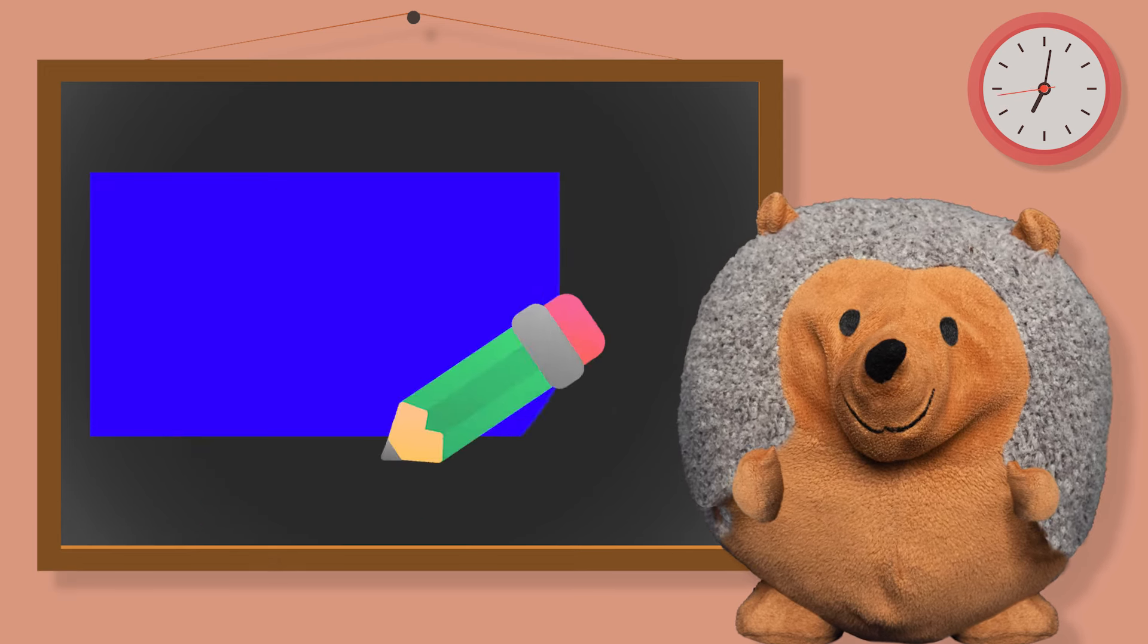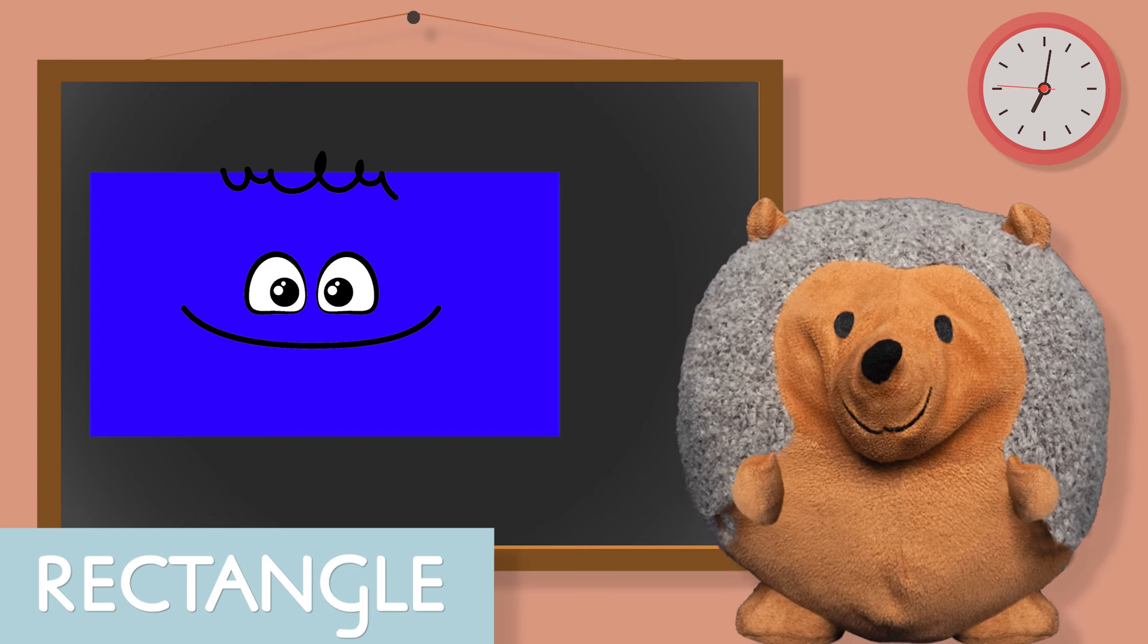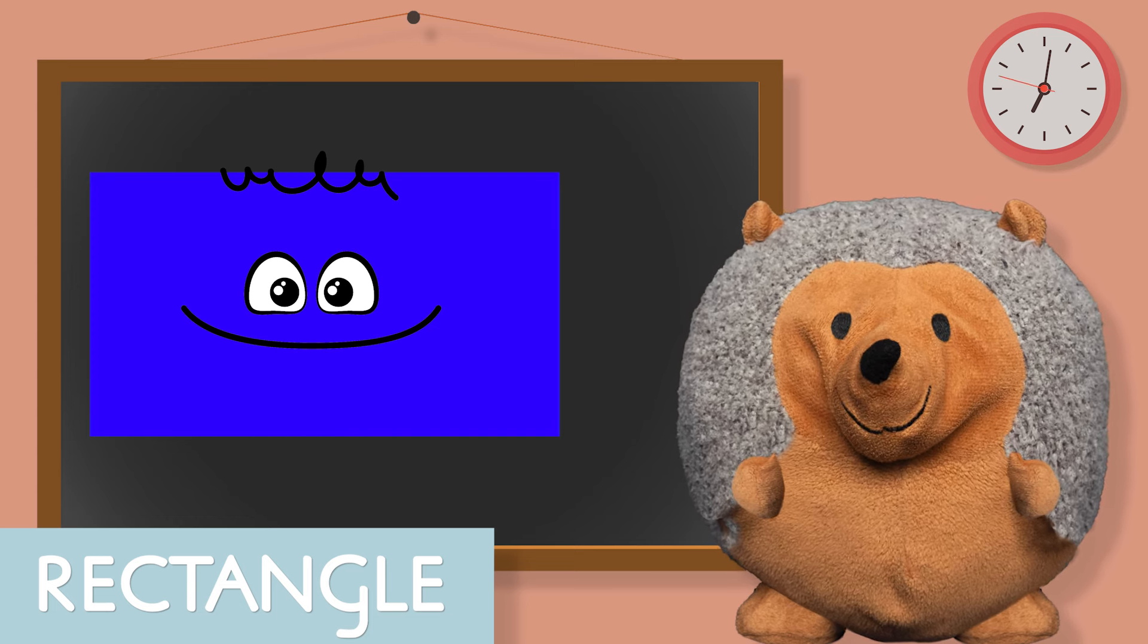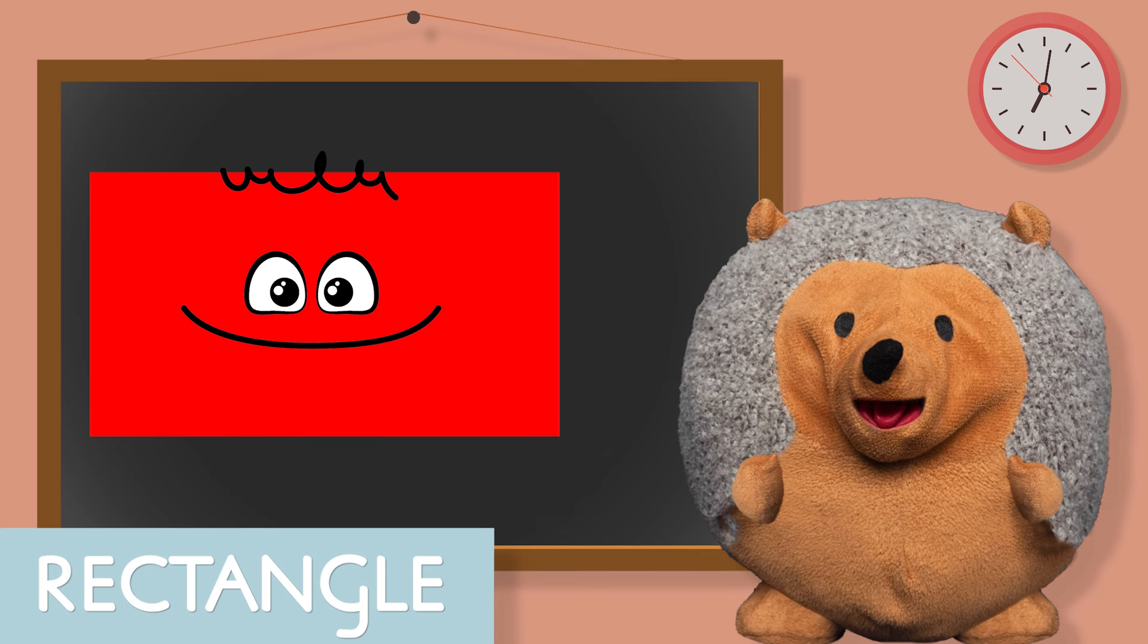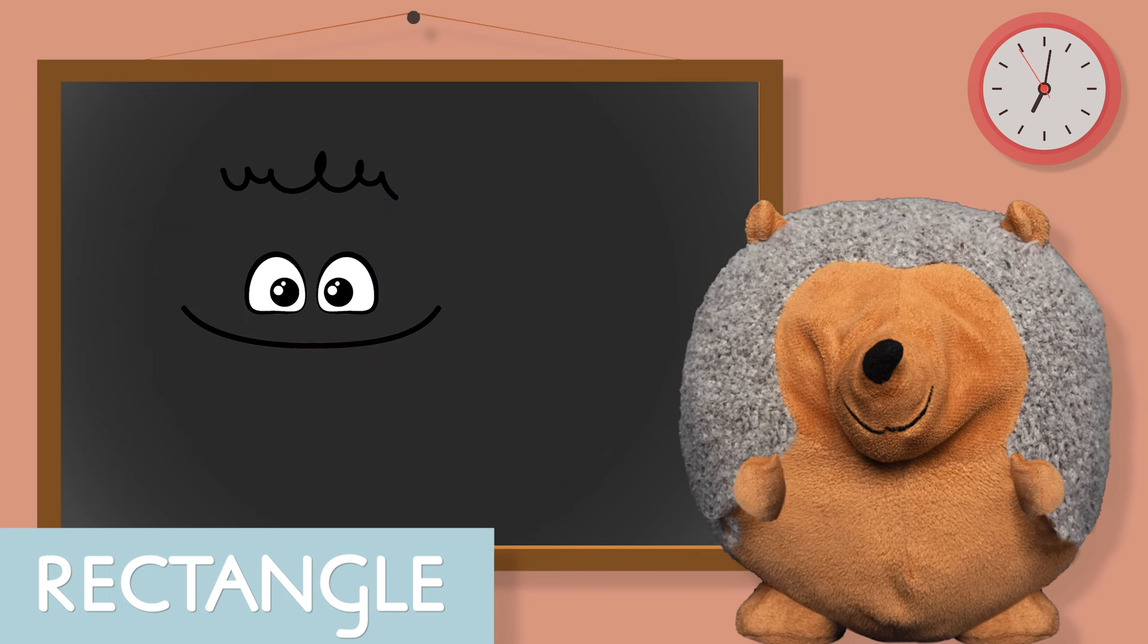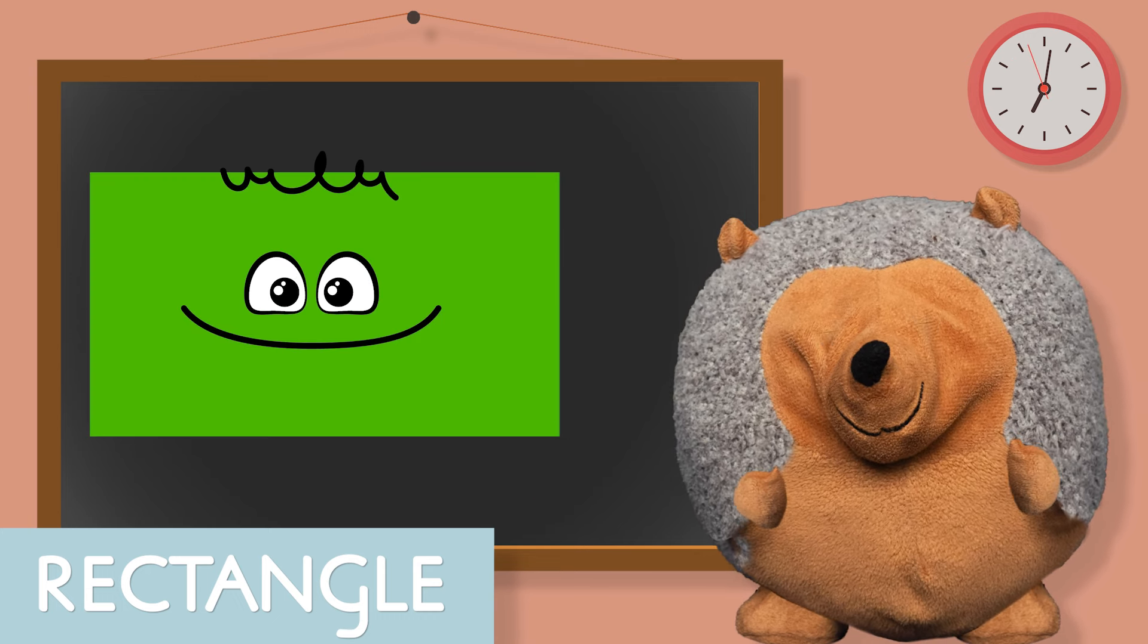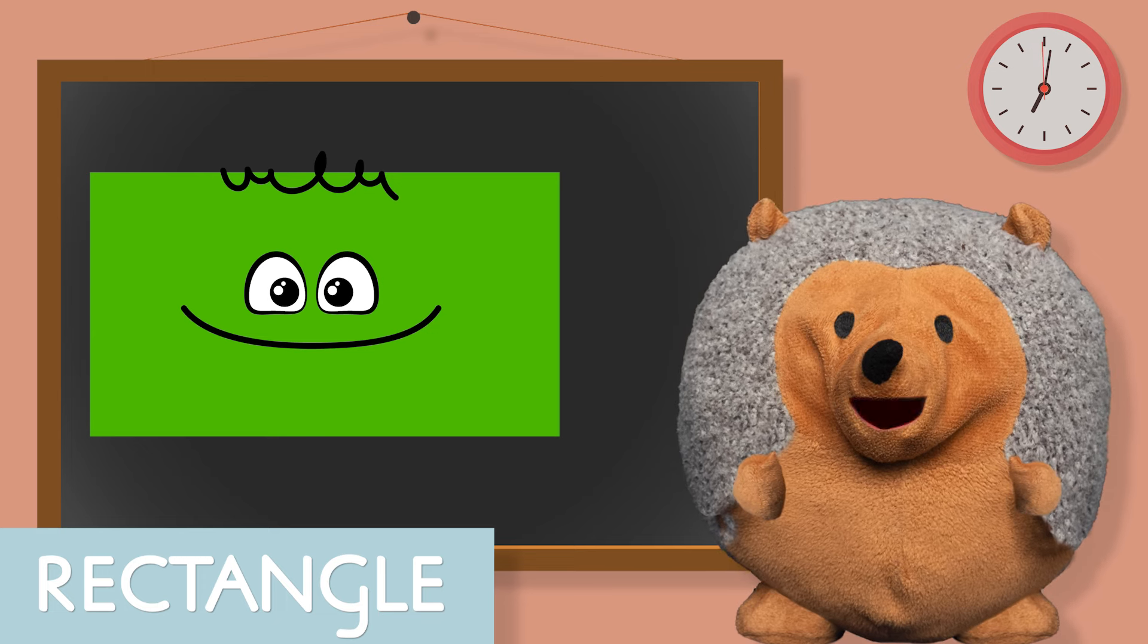Now we have a blue rectangle. And then a red rectangle. And a green rectangle. We are doing really good everybody.